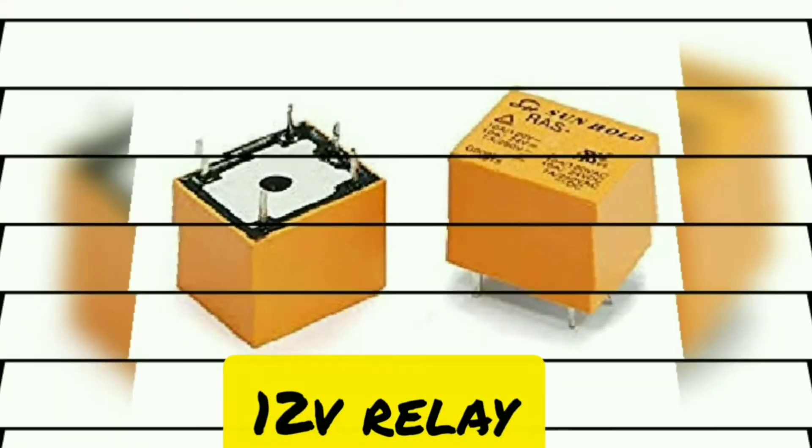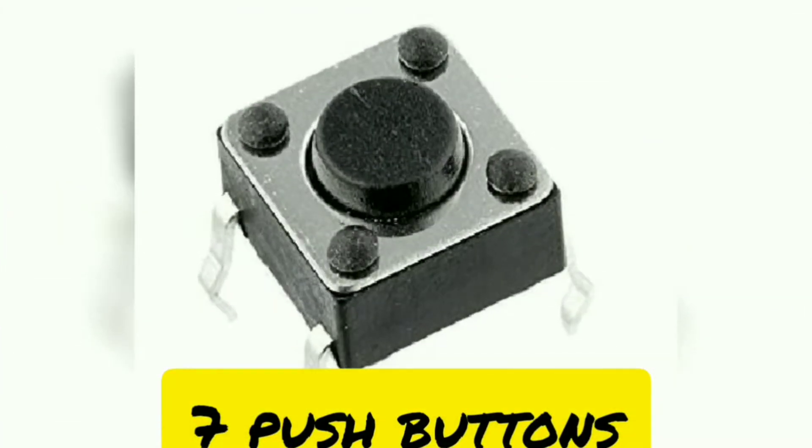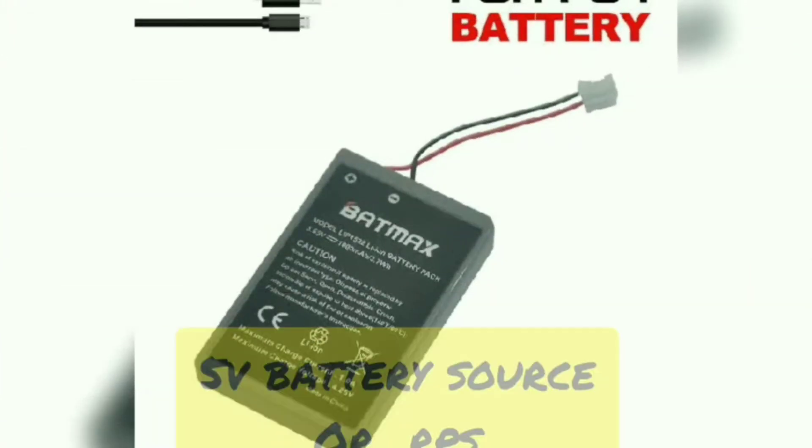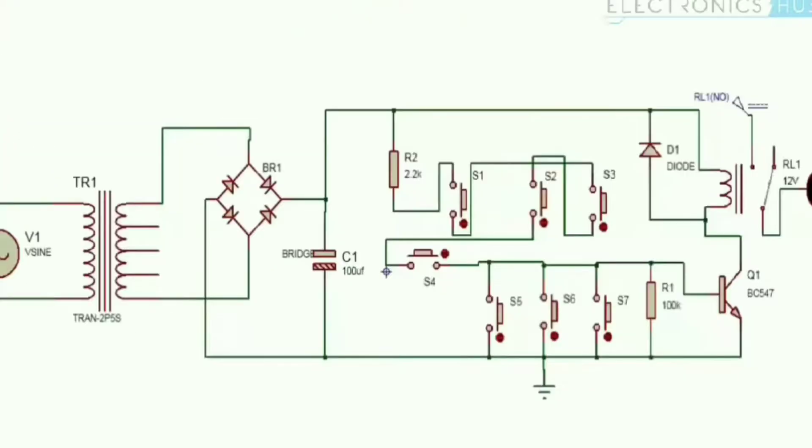Diode 1N4007, 12 volt relay, seven push buttons, transistor BC547, any 5 watt battery source, 5 watt buzzer.